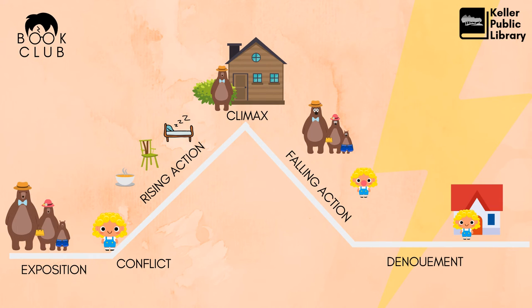Now let's look at an example of a plot diagram for a very famous story I'm sure we all know. Here is how Goldilocks and the Three Bears might look in a plot diagram. Down on the left where things are flat, the exposition is set up — we meet the three bears and get an explanation of why they have to go out into the woods and leave their breakfast on the table. We get the setup, our once upon a time.